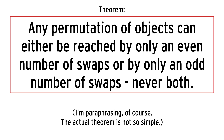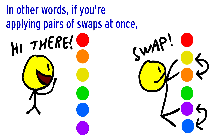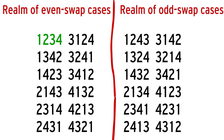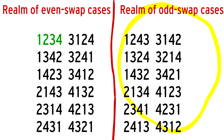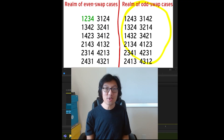So the theorem was: any permutation of objects can either be reached by only an even number of swaps, or by only an odd number of swaps — never both. In other words, if you're applying pairs of swaps at once, you can't get from the realm of cases with an even number of swaps to the realm of cases with an odd number of swaps.